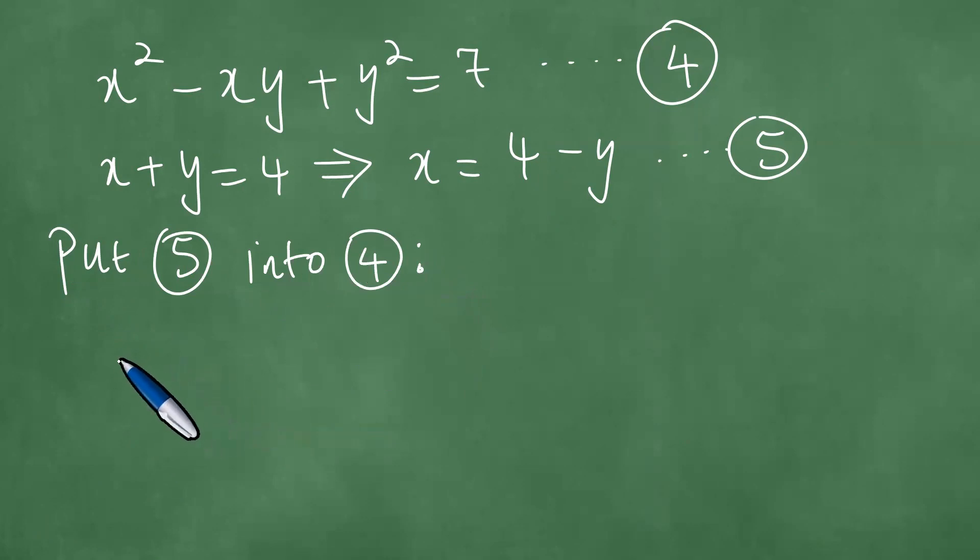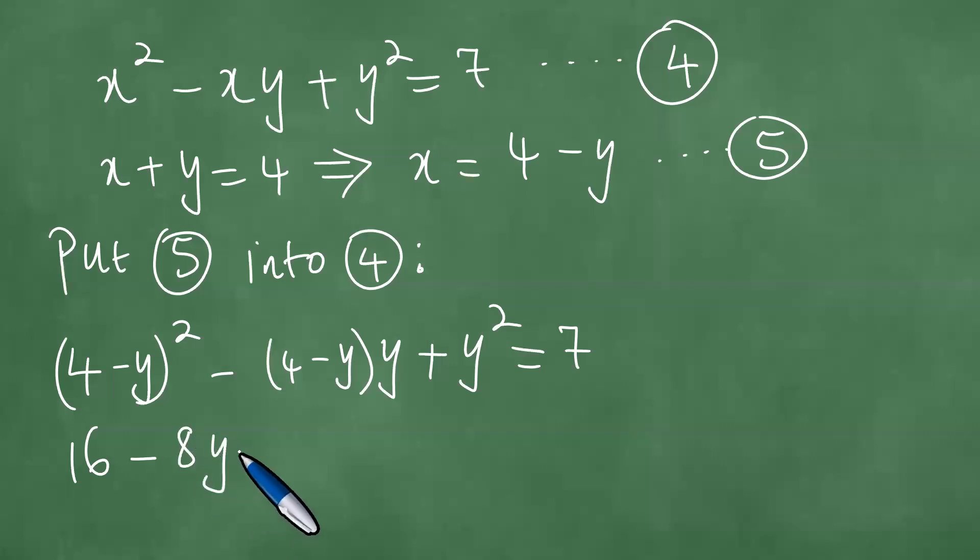Doing so means that in the place of x, you're going to put 4 minus y. So we have (4 minus y) squared minus (4 minus y)y plus y squared equals 7, which is 16 minus 8y plus y squared minus 4y plus y squared plus y squared equals 7. How many y squareds? 1, 2, 3.